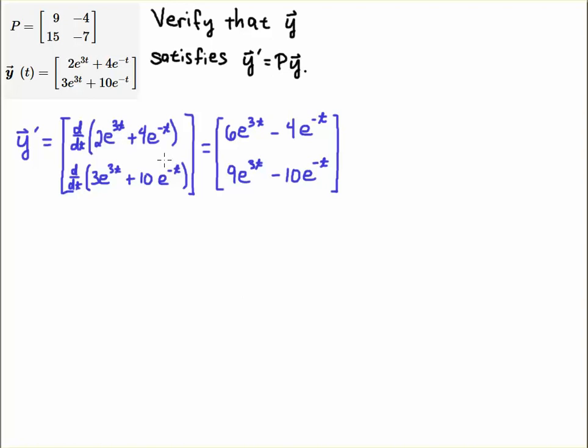When I take the derivative of e to the 3t, that's e to the 3t back again, but the chain rule says the derivative of 3t is 3, so 2 times 3 is 6, and likewise, we get a minus 4e to the minus t. 3 times 3 is 9, 9e to the 3t minus, and then 10e to the minus t.